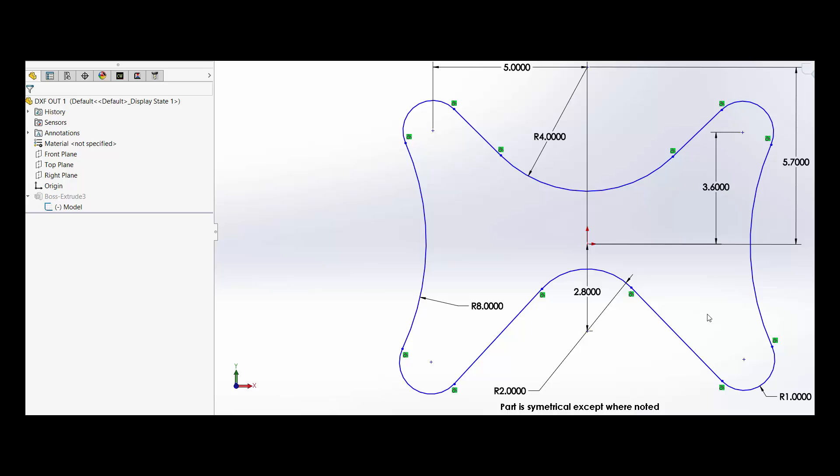The problem with this part is none of the tangency points, and you can see the green indicator here showing that these are all tangent, none of those points are given. So this is a problem for some people.